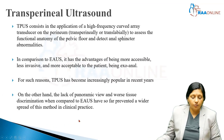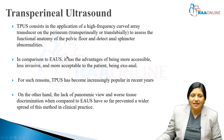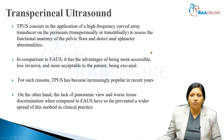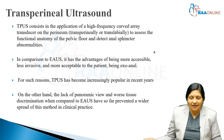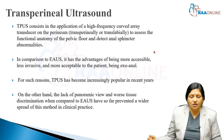Coming to another modality — transperineal ultrasound — this involves the application of a high frequency curved array transducer on the perineum. Transperineal ultrasound can also be done translabially to assess the functional anatomy of the pelvic floor and detect anal sphincter abnormalities. In comparison to endoanal ultrasound, it has the advantage of being more accessible, less invasive since the probe is not inserted into the anus, and more acceptable to the patient being exo-anal.